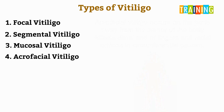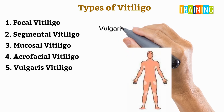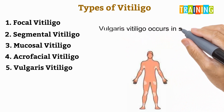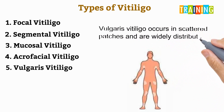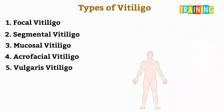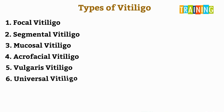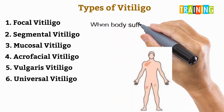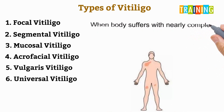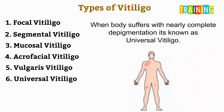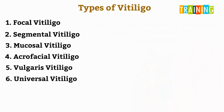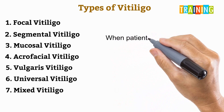Vulgaris vitiligo occurs in scattered patches that are widely distributed across the body. Universal vitiligo is when the body suffers nearly complete depigmentation.